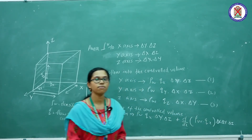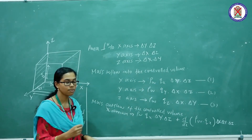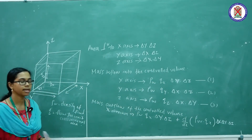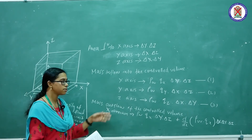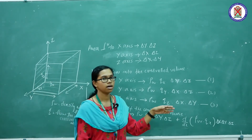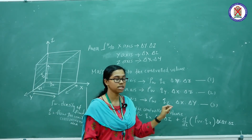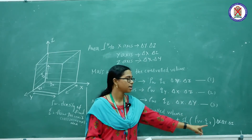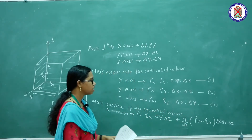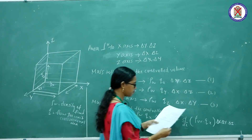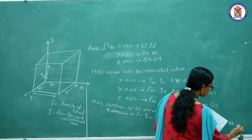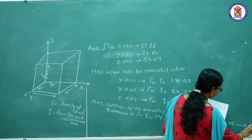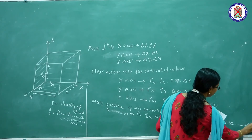Because water is flowing in all three dimensions, we have to consider the rate of change in length in the x, y, and z directions respectively. This equation is numbered as Equation 4.